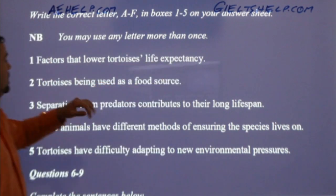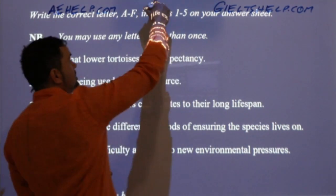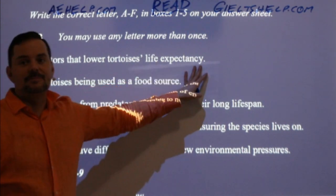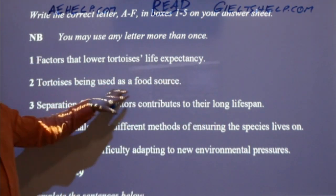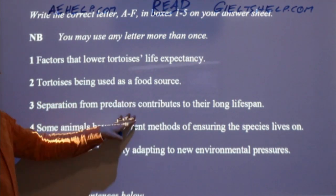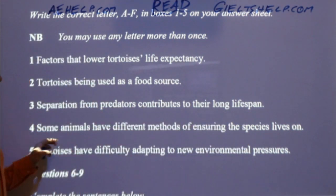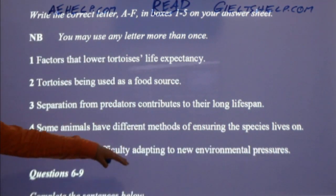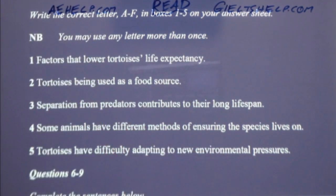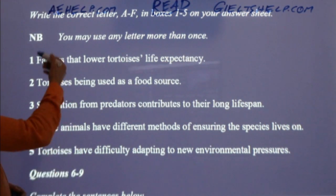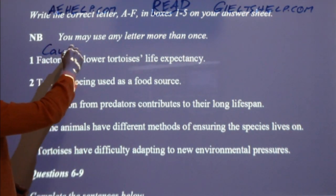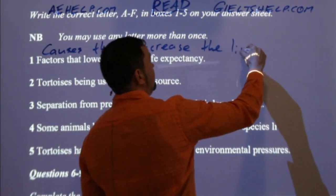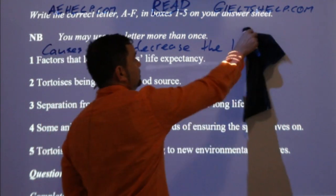Note: you can use any letter more than once. Let's read these together — this is a reading class, so read with me. Number one: 'Factors that lower tortoise's life expectancy.' Paraphrase: causes that decrease the lifespan of tortoises.